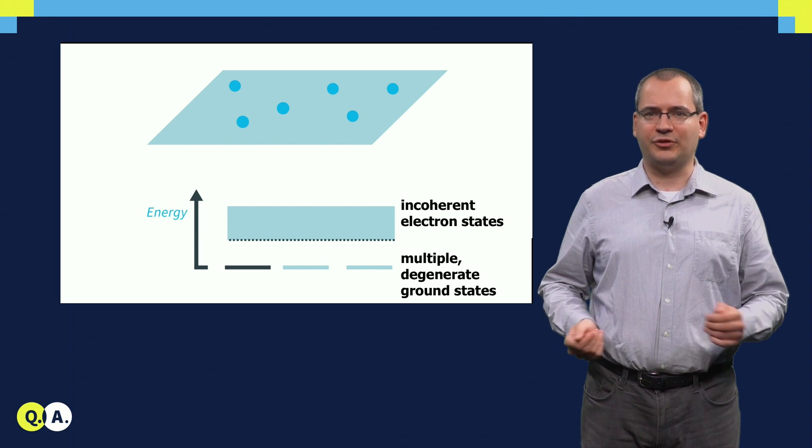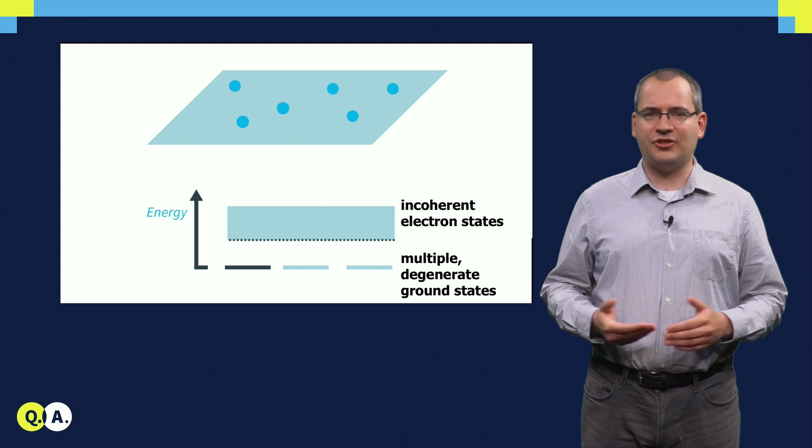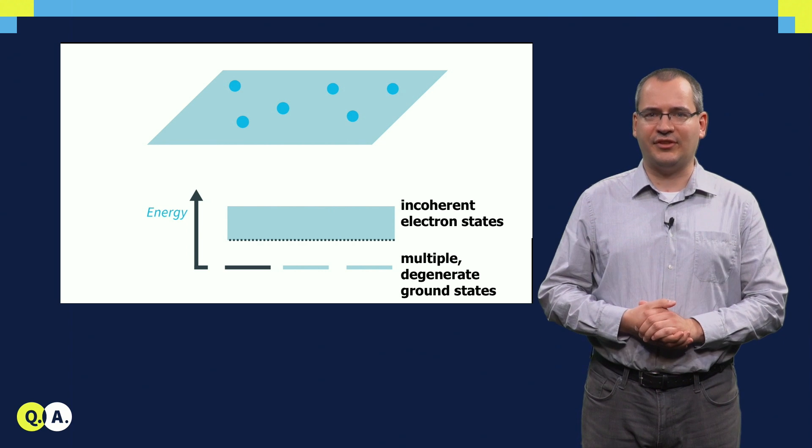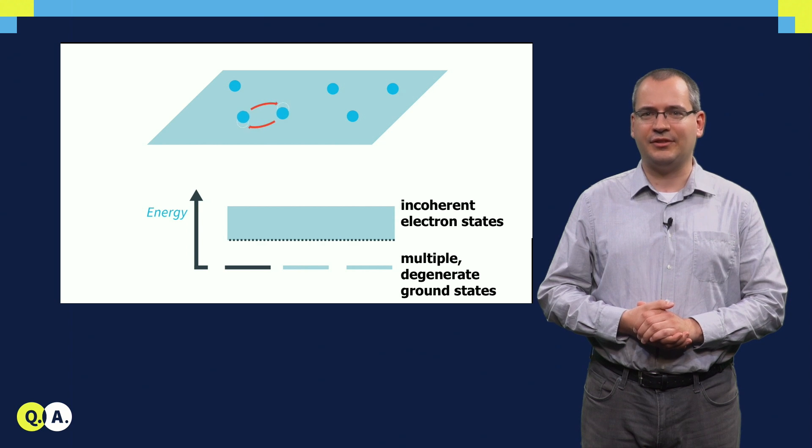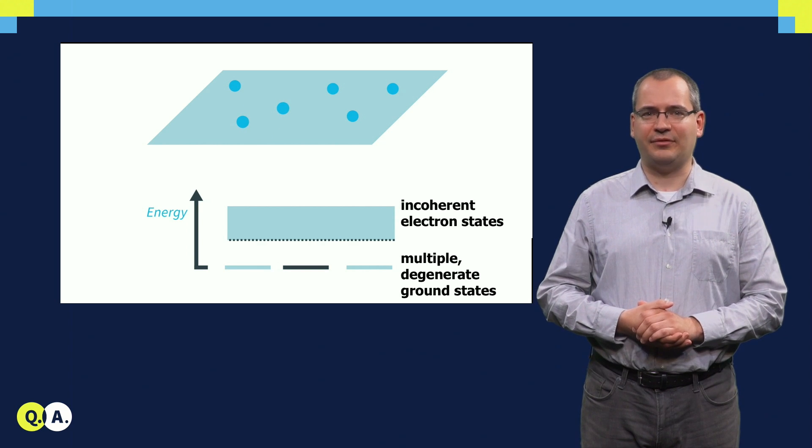To perform coherent operations, we want to stay in the ground state of the system. Our exchange operation then moves the system from one ground state to another. This means that these states define a quantum bit, which is free from relaxation.